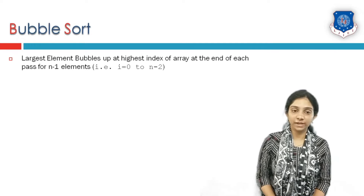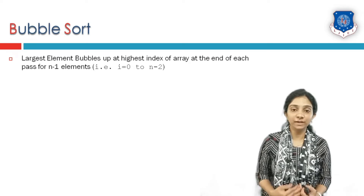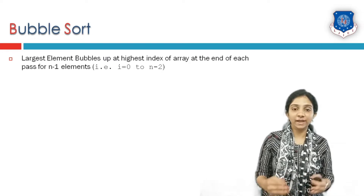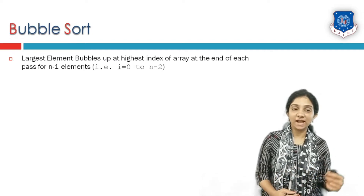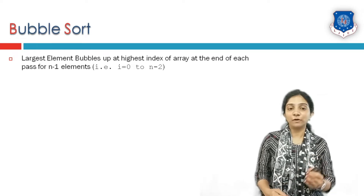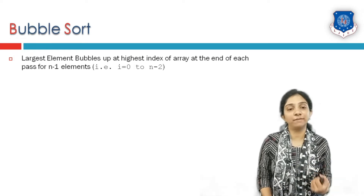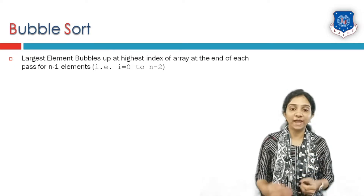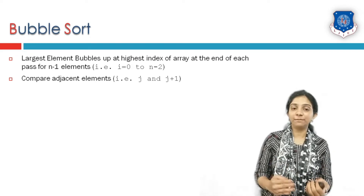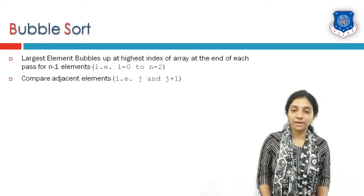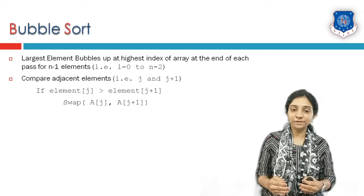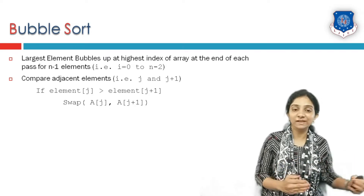Bubble sort is a sorting algorithm used to sort elements of a given list or array. It every time bubbles up the largest element to the end of the array. The largest element is sorted up at the highest index at the end of each pass. For n elements, it will repeat n-1 times, and at the end only one element will be left, which is sorted by itself. It compares two adjacent elements at index j and j+1, and if the first element is greater than the later element, they are swapped so the largest element takes its place at the next location.